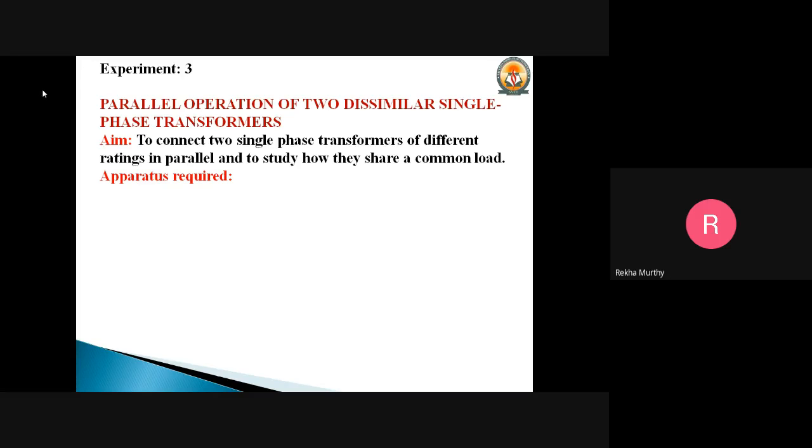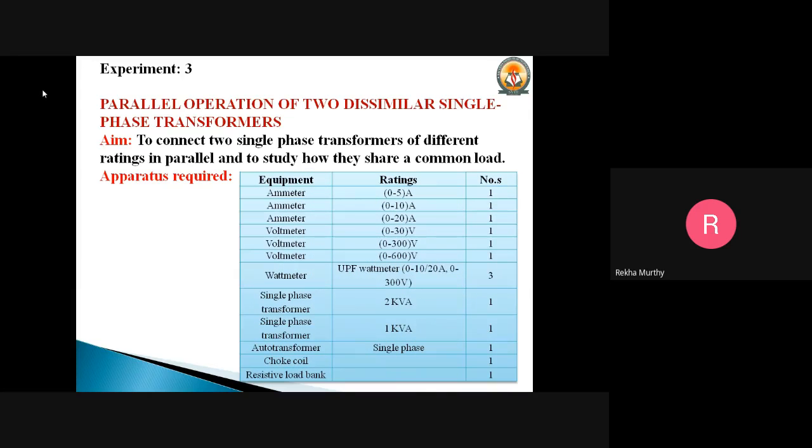What are the apparatus we require to conduct this experiment? We require an ammeter 0 to 5 amperes and another ammeter of 0 to 10 amperes and 0 to 20 amperes, 0 to 30 volts. We require voltmeters: 0 to 30, 0 to 300, 0 to 600 volts as per what we had considered for the previous session experiments.